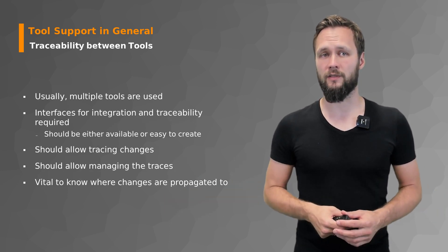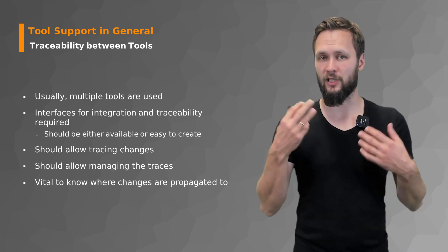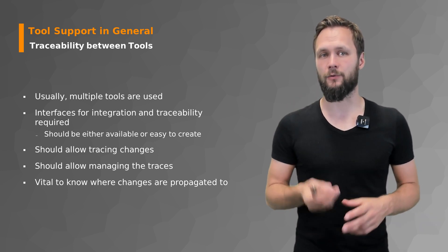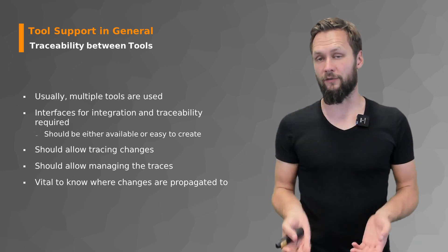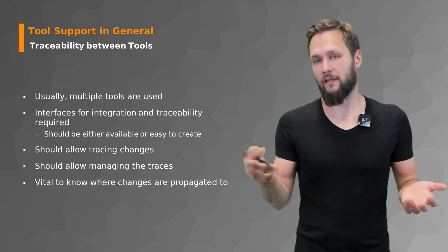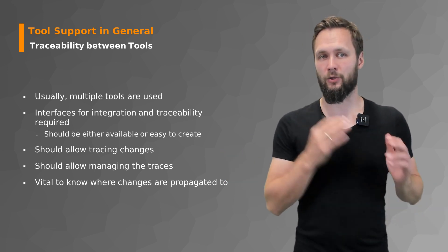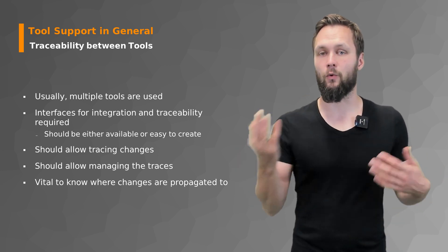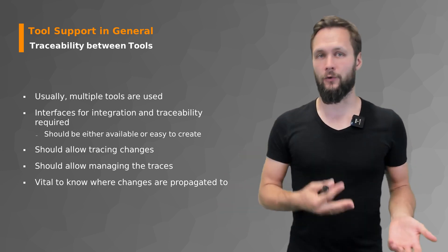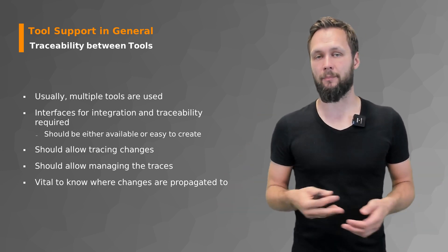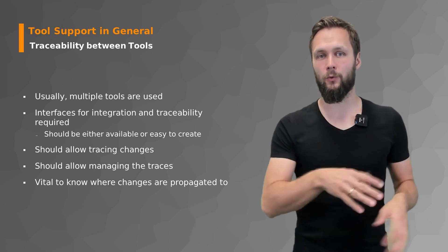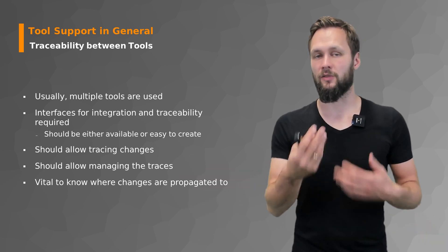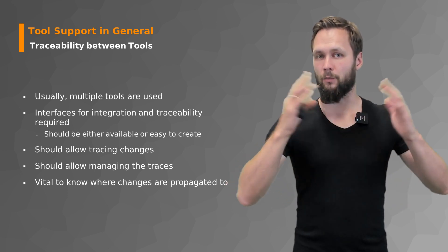What is particularly important is traceability between tools, especially because you're going to use multiple tools. When you have multiple tools you would like to have interfaces for integration and traceability. It should allow for tracing changes, managing the traces, and understanding who made changes, when, and why — something like GitLab or Git commits, where you know who committed what, what was changed, when it was changed, and what the effect was, just at a broader and more general level.